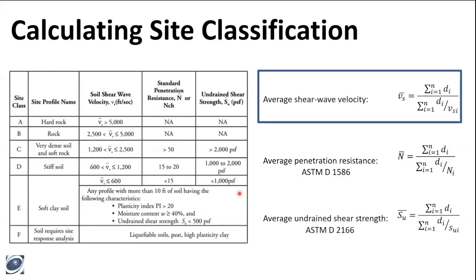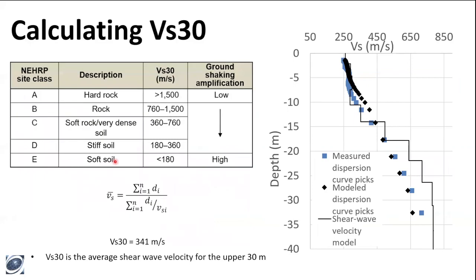Since we're geophysicists, we're primarily going to be talking about the average shear wave velocity. When we say average shear wave velocity, we usually refer to the shorthand VS30 — shear wave velocity of the upper 30 meters — or VS100 for the upper 100 feet. To establish VS30, we need a velocity model. This is a velocity model from an MASW survey I did in Western Washington near Vancouver, Washington. This black line represents the shear wave velocity model. Each one of these blocks is a model layer. We use this velocity model and an equation to establish our VS30 — in this case, 341 meters per second, which puts it solidly in site class D.